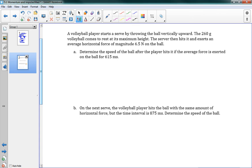So we'll take a look at volleyball now. It says a volleyball player starts to serve by throwing the ball vertically upward. The 260 gram volleyball comes to rest at its maximum height. The server then hits it and exerts an average horizontal force of magnitude 6.5 newtons on the ball. So if you've ever played volleyball, this person is throwing it up in the air and then spiking it. So we want to determine the speed of the ball after the player hits it if the average force is exerted on the ball for 615 milliseconds.